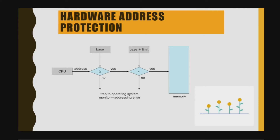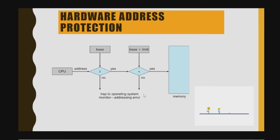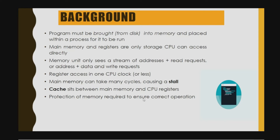Hardware address protection is based on the base and limit registers using an if-else check. The CPU address is checked: if it is greater than or equal to the base, then it checks if it is less than base plus limit. If yes, it goes to memory; otherwise it traps to the operating system monitor. This is the protection part — memory protection is required to ensure correct operation.